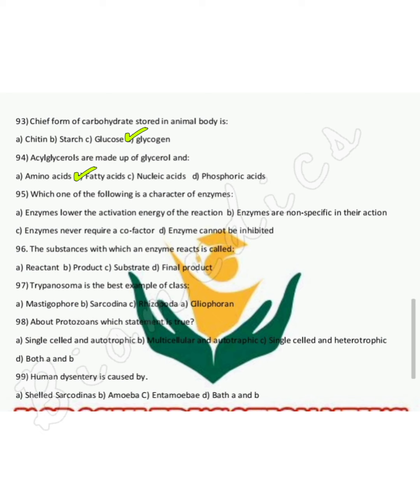A characteristic of enzymes is that they lower the activation energy — Option A is correct. Enzymes are specific, can need co-factors, and can be inhibited. The substance with which an enzyme reacts is called a substrate, not just a reactant.